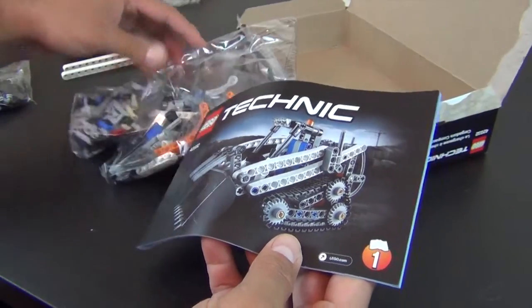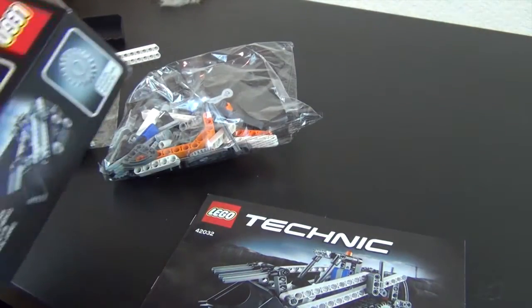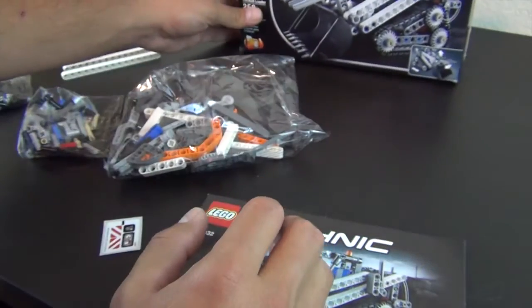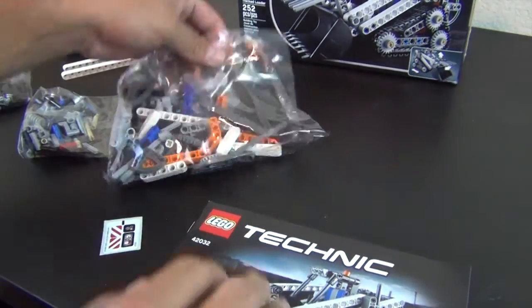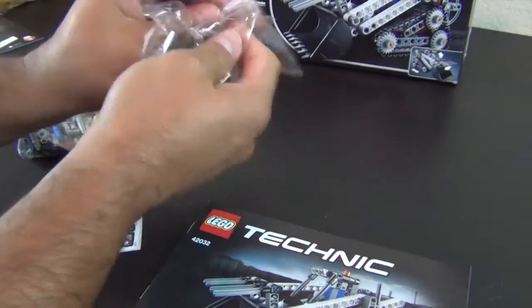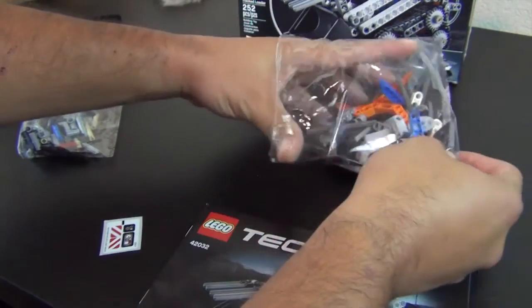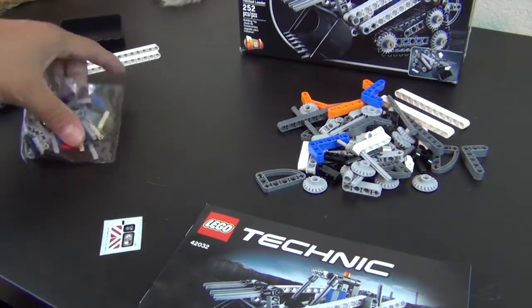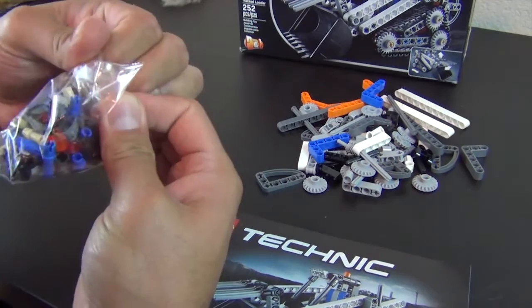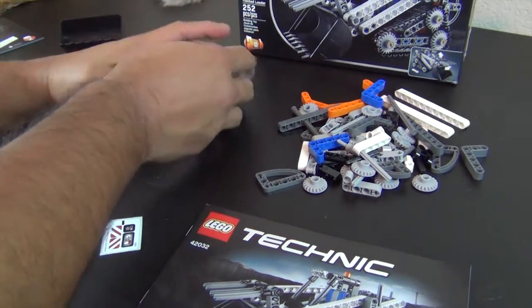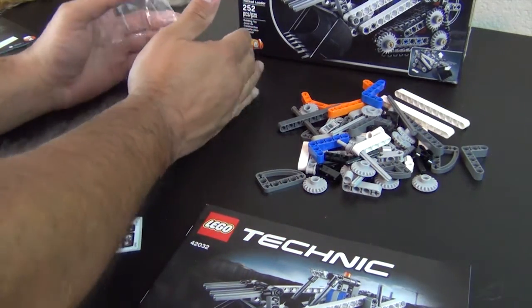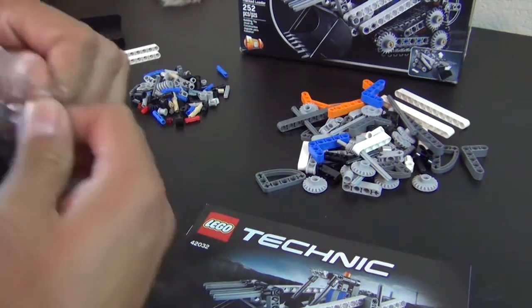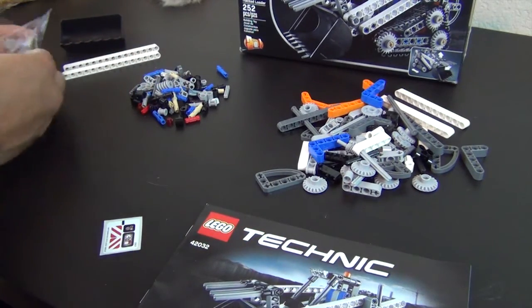They usually put both instruction books in these medium-sized models. Oh, and one other thing - a little sticker sheet. The bigger models usually just put one instruction book in and leave it up to you. If you want the alternate model instructions on those bigger sets, you have to go to the Lego website and download them.